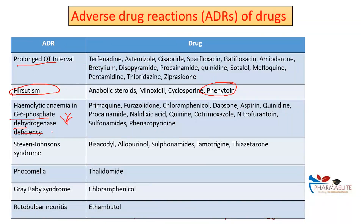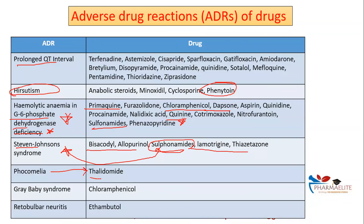Prolonged QT interval is caused by multiple drugs — read through all of them. Hemolytic anemia in G6PD-deficient individuals is classically caused by chloramphenicol, dapsone, primaquine, various sulfonamides, and quinine — try to remember at least five or six. Stevens-Johnson syndrome is known mainly with sulfonamides, but also with lamotrigine, thiacetazone, allopurinol, and bisacodyl. For phocomelia, thalidomide is the causative drug. Gray baby syndrome is caused by chloramphenicol, and optic neuritis is associated with ethambutol — specifically the RR enantiomer.